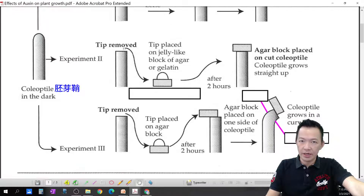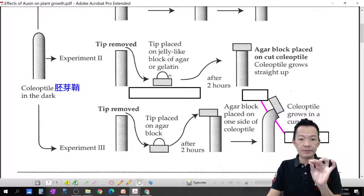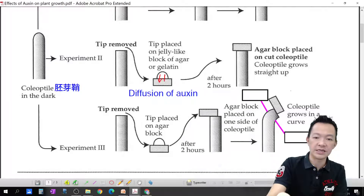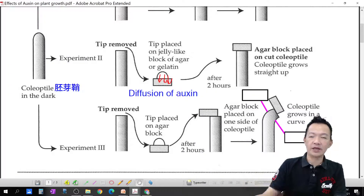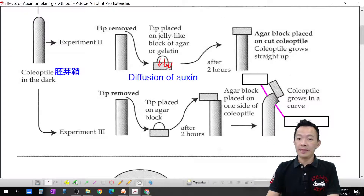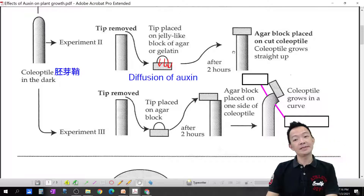The tips of the coleoptile with auxin are removed again, and the tips are placed on a jelly-like block of agar or gelatin. The auxin diffuses into the jelly block. Now the jelly has auxin in it. Then the jelly block is placed back on top of the coleoptile — and the coleoptile grows straight up again. This means: with auxin present, the plant can grow.